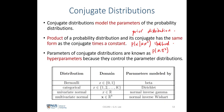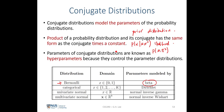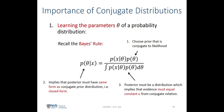For example, for the Bernoulli distribution, the conjugate is the beta distribution. The conjugate is defined such that the product of the probability distribution and its conjugate has the same form as the conjugate times a constant, which simplifies many computations. The parameters within the conjugate distribution are known as hyperparameters — they are fixed by hand and are not learned from data.